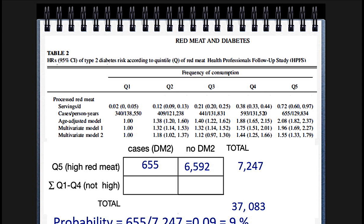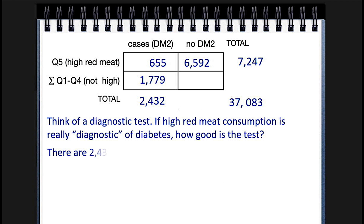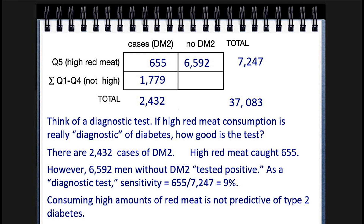We fill in a couple of extra points. It's good to know the true negatives — we're adding up quintiles 1 through 4. What does it mean? If you think of it as a diagnostic test, the high red meat group caught 655 cases. We have a lot of false positives. The sensitivity is 9%, and this is a lousy test. High amounts of red meat is not predictive of type 2 diabetes.